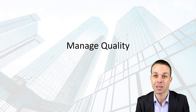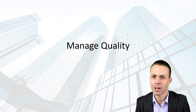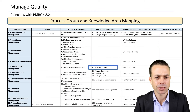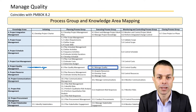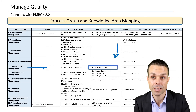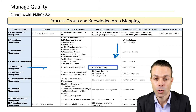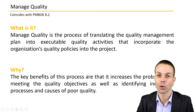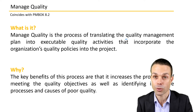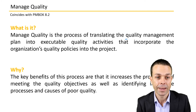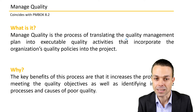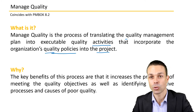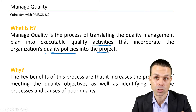Welcome back to the processes within the Project Management Body of Knowledge. We're getting into the management section of quality. We've got Project Quality Management as our knowledge area and we're in the executing process group, starting to create deliverables and managing their quality. Manage Quality is the process of translating the quality management plan into executable quality activities, like testing, that incorporate the organization's quality policies into the project.